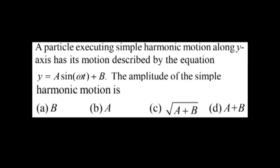A particle executing simple harmonic motion along the y-axis has its motion described by the equation y = A sin(ωt) + B. The question asks for the amplitude of the simple harmonic motion. Options are: A is B, B is A, C is √(A+B), and D is A+B.